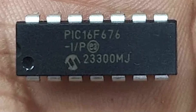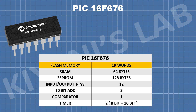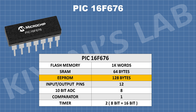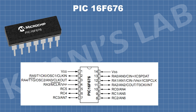The microcontroller we are going to use is PIC 16F676. It is a 14-pin flash-based 8-bit CMOS microcontroller. It has 128 bytes of EEPROM, 12 IO pins, 8 10-bit ADC channels, 1 comparator, and 2 timers. This is the pin configuration of PIC 16F676 — it has 2 ports: port A and port C.